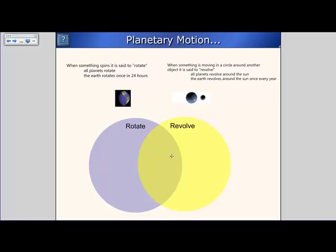Students might come up with things like planets do it in the middle, and rotate would be words like spin and circle. Revolve would be things like move around and year. The words that only apply to revolve, words that only apply to rotate, and words that apply to both.